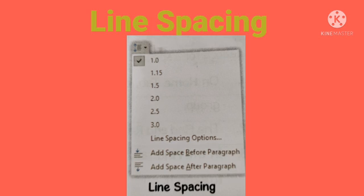To change line spacing, follow these steps: first, select the text you want to format. Second, on the Home tab, in the Paragraph group, click on Line and Spacing. Third, a drop-down menu appears. Fourth, select the desired spacing. Thank you.